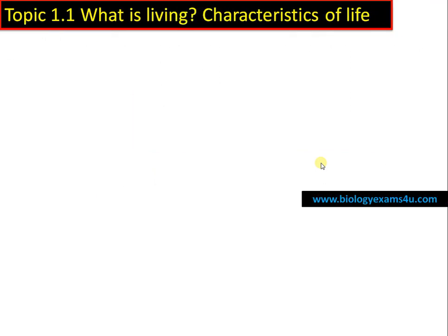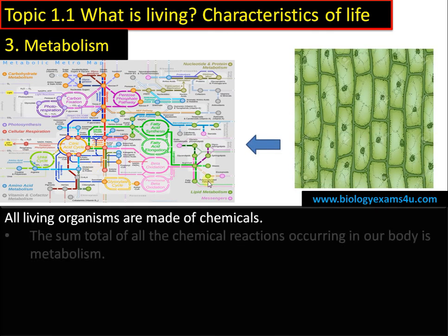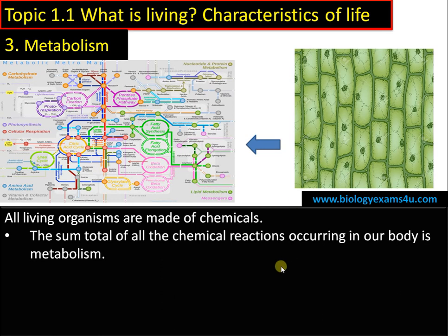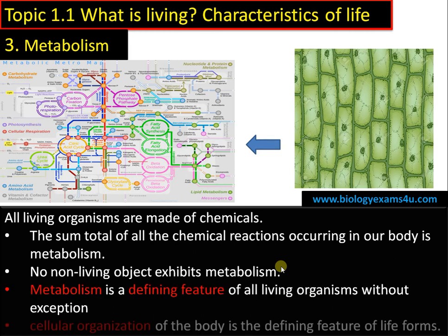Moving into the third feature: metabolism. Think about cellular respiration — glycolysis, the Krebs cycle, the electron transport chain, hundreds of enzymes. Think about photosynthesis and cellular respiration — hundreds of enzymes are involved in just these two reactions. There are hundreds of thousands of reactions going on within a cell. The sum total of all chemical reactions occurring in our body is termed metabolism. Non-living things do not show metabolism, so metabolism is a defining feature of living organisms, made possible by cellular organization — thousands of reactions happening within the compartments called cells.